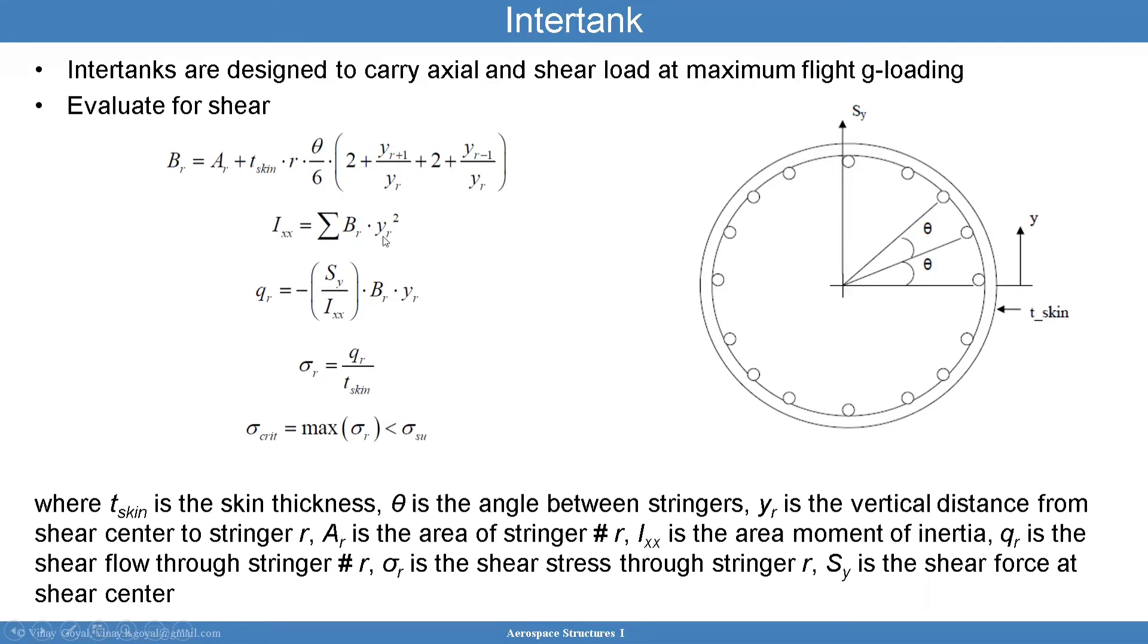I have the moment of inertia which is this mysterious BR which I'll show how to calculate. So you calculate BR for each of these stringers and then times YR squared. YR is known because you know the location of the stringer. So now I have to show you how to calculate BR. BR equals AR which is the cross-sectional area of stringer number R plus the skin thickness times R.